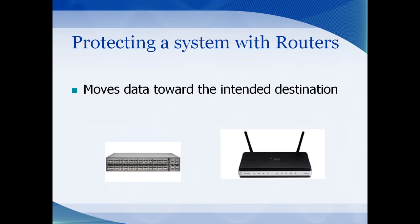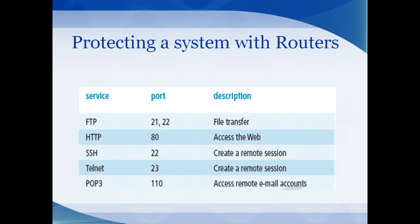Your router acts as another way to protect your computer network. The job of the router is to move packets — pieces of data — to their destination. All information on the internet is specialized: browsing the internet, accessing your email, online gaming — each of these services uses a unique port or opening on the internet where information travels. As you're surfing the web, you're using a service called HTTP. You may have seen that in the URL. HTTP uses port 80 to transfer data.